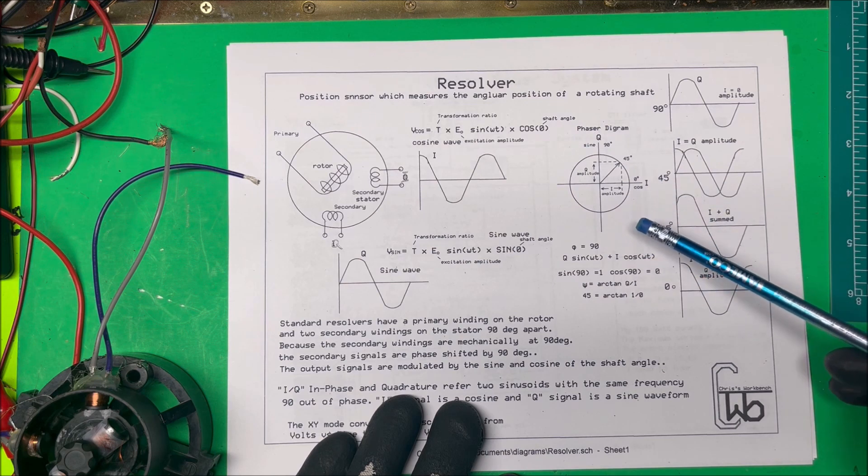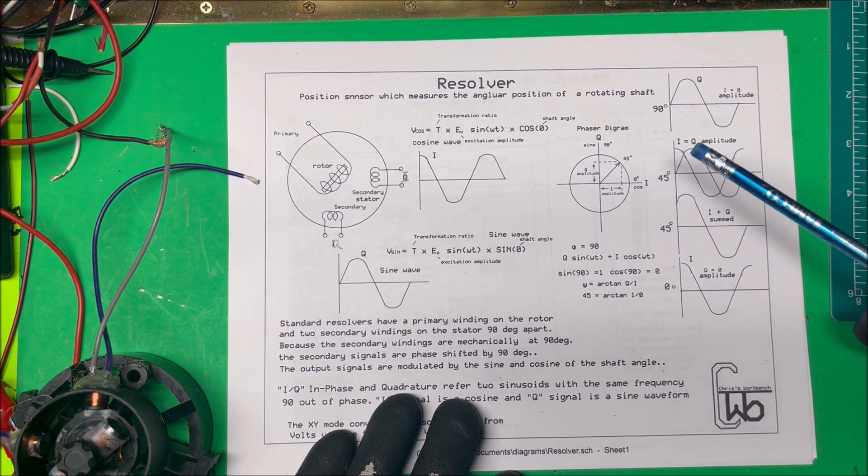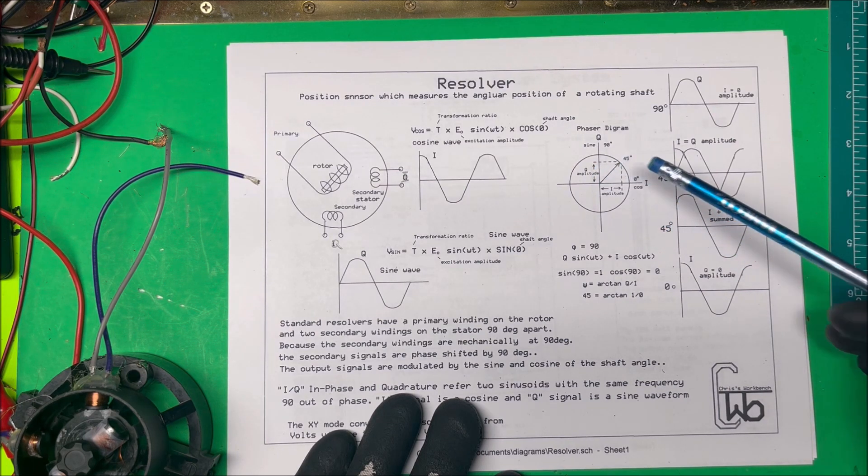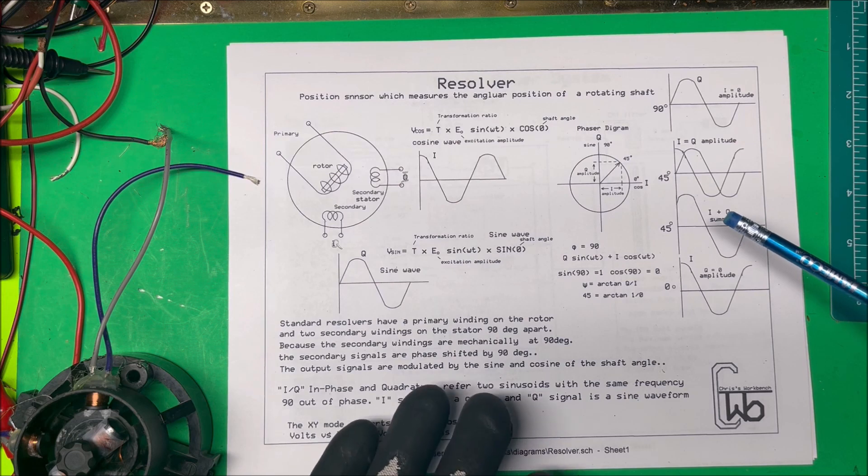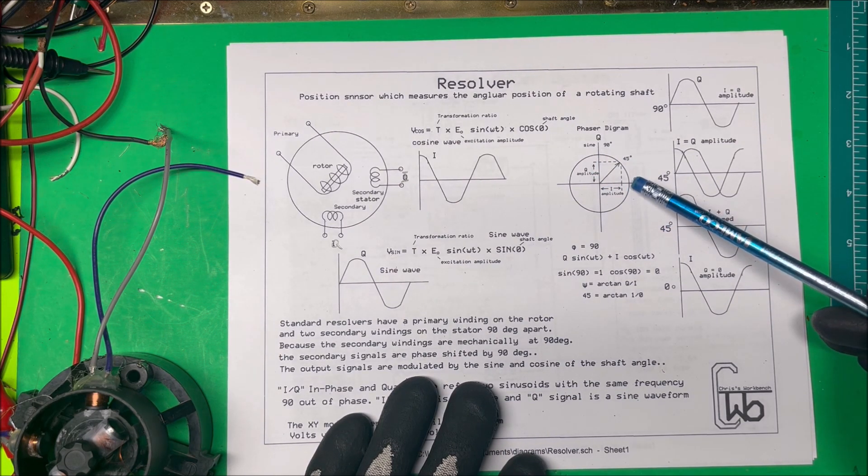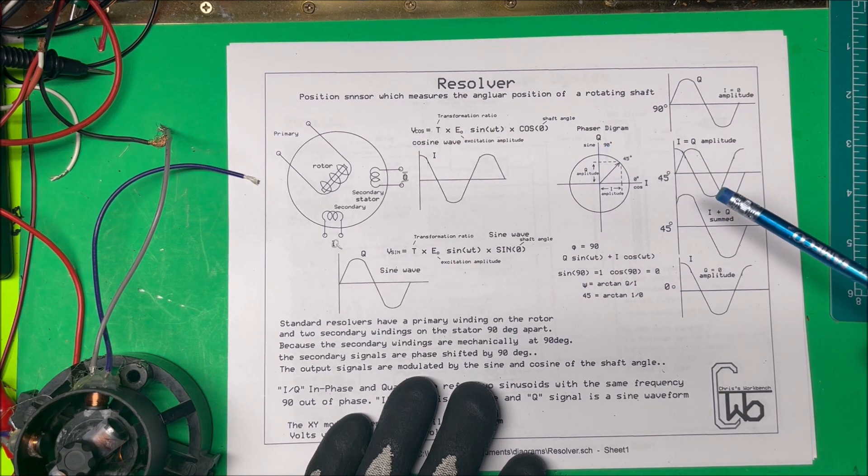But on this phasor diagram, it's probably easier to see. So you have your amplitude here of your I signal and your amplitude of the Q signal. And if those two amplitudes are the same, then your vector is going to be at 45 degrees. And if your Q signal is zero and you just have the I signal, then you're going to be at zero degrees. And if your I signal is zero and you just have your Q signal, you'll be at 90 degrees.